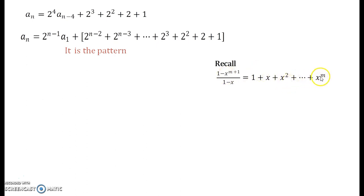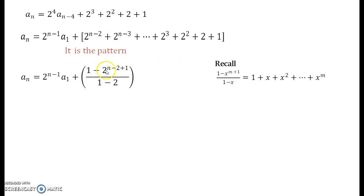Apply this formula: the highest power index in the expansion is m, and the compact form is (1 − xᵐ⁺¹). Here the highest index is n minus 2, so in compact form it becomes (1 − 2ⁿ⁻²⁺¹) / (1 − 2), i.e., the highest index plus 1 becomes n minus 1, with x replaced by 2. The remaining term 2ⁿ⁻¹ · a₁ remains untouched.